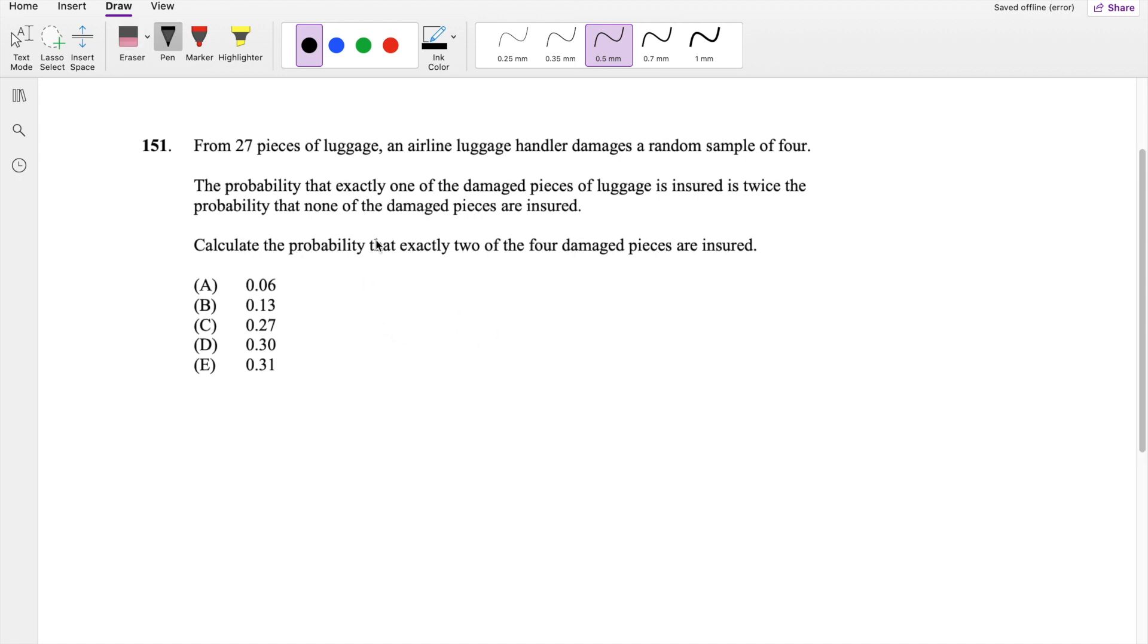So they tell you that the probability that exactly 1 out of 4 damaged luggage is insured is twice as likely that there is 0 out of 4 is insured. So then that means the total number of damaged luggages, 27 choose 4, and that's because there's 27 luggages that are handled and 4 of them are damaged. And then out of that damaged goods, we're trying to see how many of them are insured.